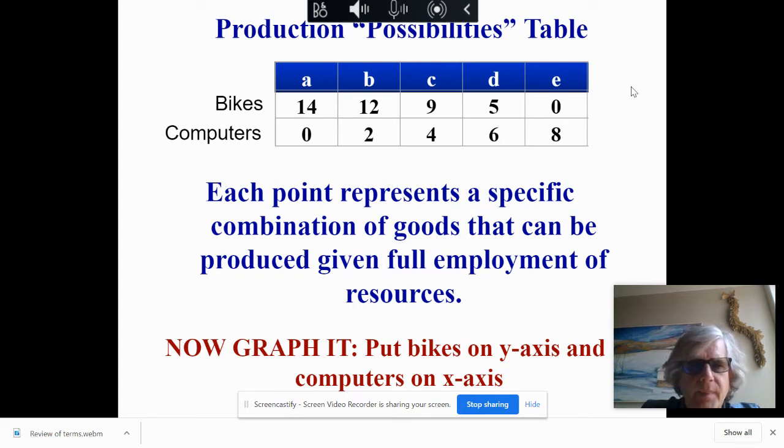So in this economy there's bikes and computers. You can make 14 bikes and zero computers, 12 bikes and two computers, nine bikes and four computers, five bikes and six computers, and then zero bikes and eight computers. This is typically a table that you'll see.